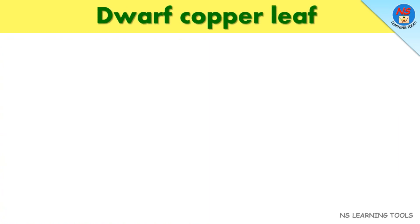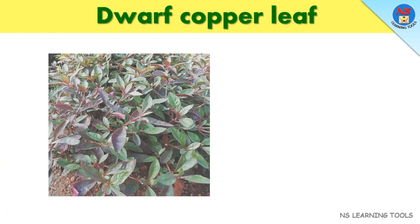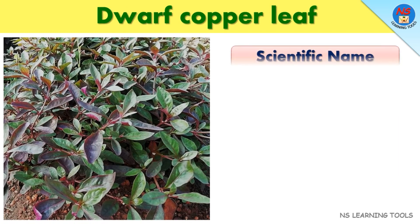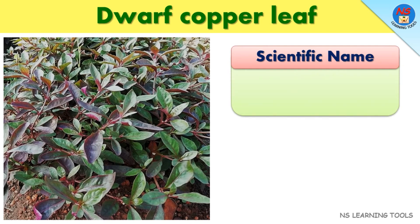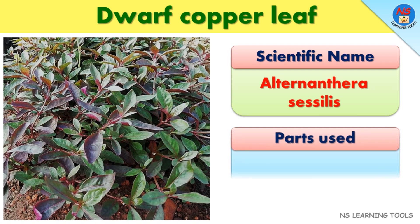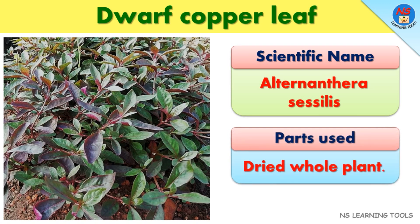Dwarf copper leaf. Scientific name: Alternanthora sessi. Parts used: Dried whole plant.